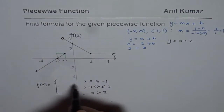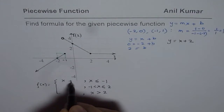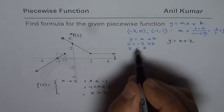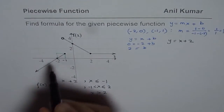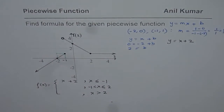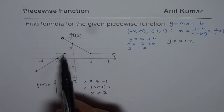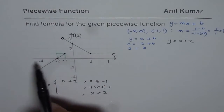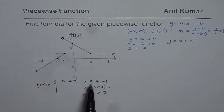Since b is two, the equation of the first function is y equals x plus two, where y is f of x. So in our piecewise function, the piece from minus infinity to minus one is x plus two.